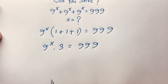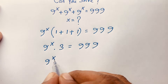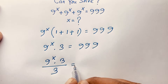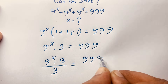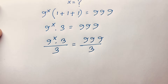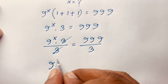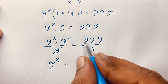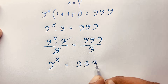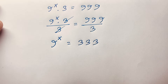If I divide both sides by 3, we get 9^x times 3 divided by 3 equals 999 over 3. The 3s cancel out, and we find that 9 to the power x is equal to 333.